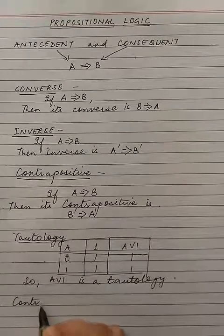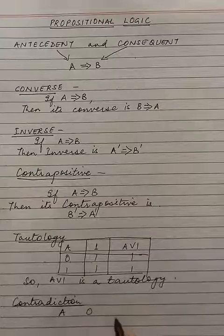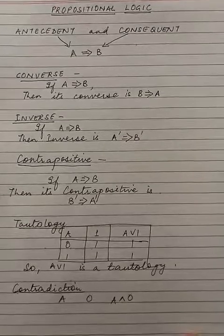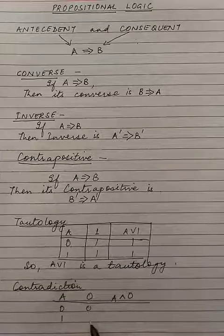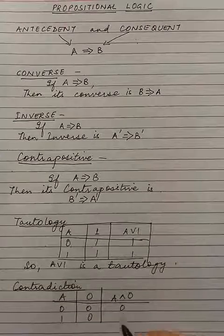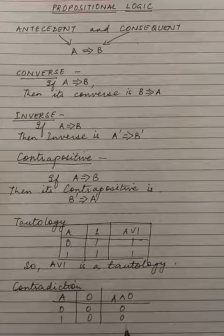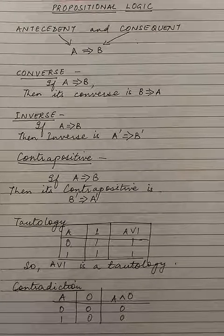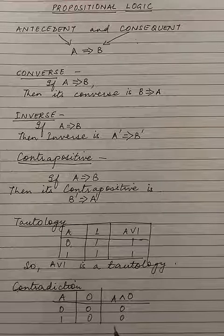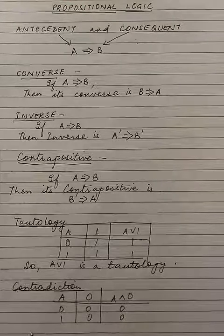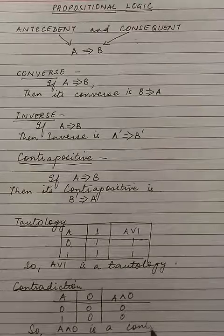Next is contradiction. Consider A AND 0. A can be either zero or one, but AND with zero will always be zero. When the output of a compound proposition is always false, it is called a contradiction. So A AND 0 is a contradiction.